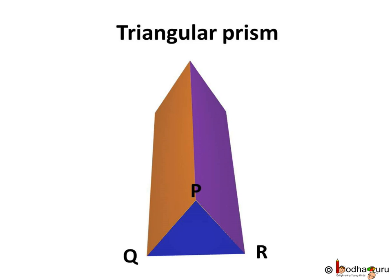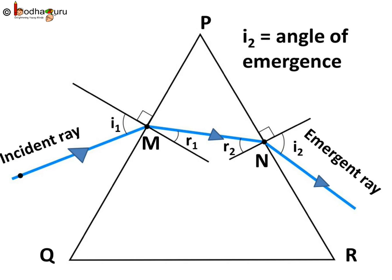Here PQR is the outline of the prism and its triangular face is facing us. A ray of light is incident on the surface PQ at point M. Here angle of incidence and angle of refraction are I1 and R1 respectively.